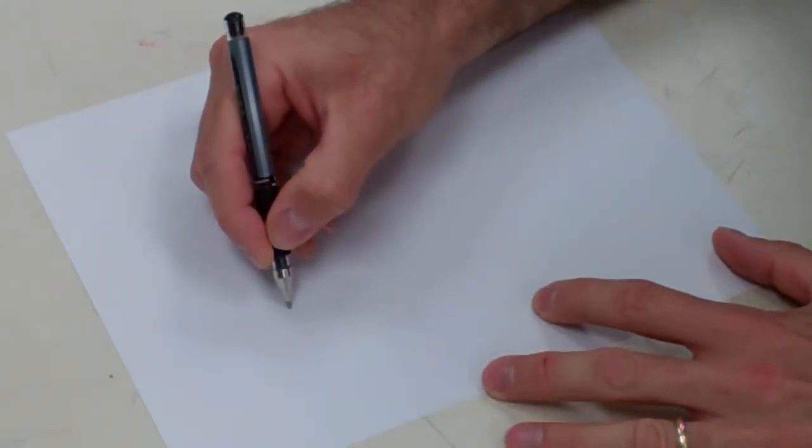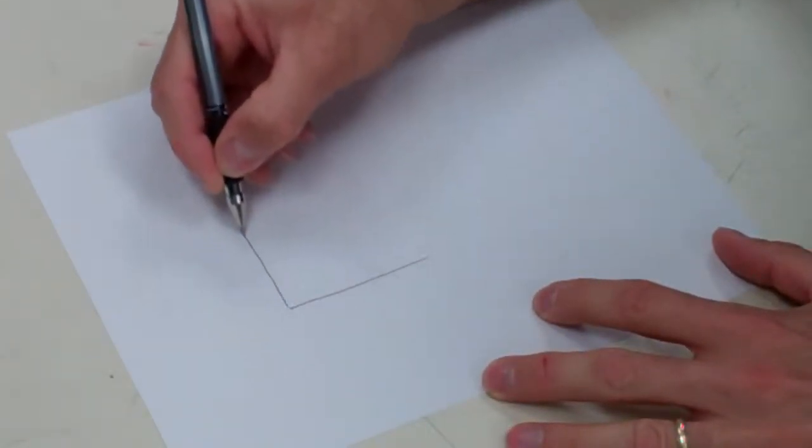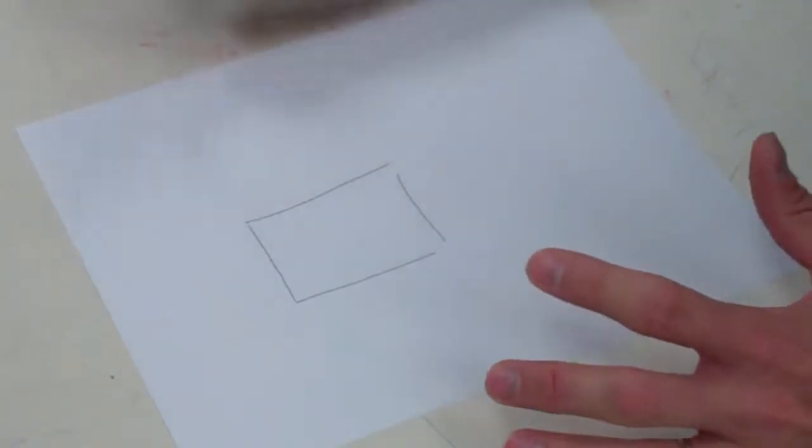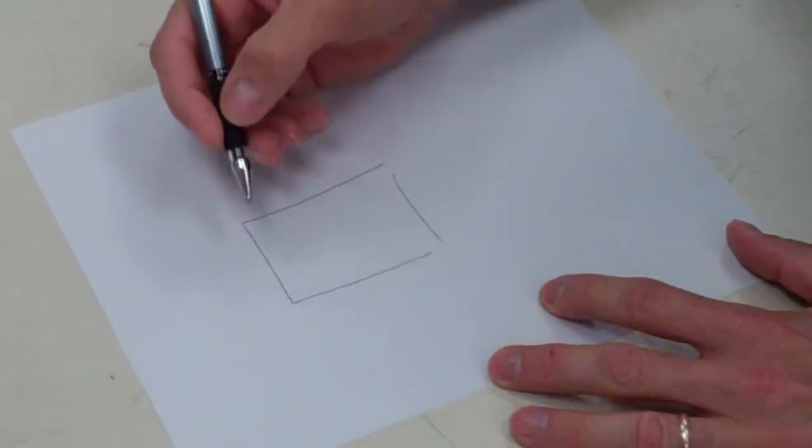So thumbnail sketches are small little sketches about this size. You figure about maybe two inches by three inches, maybe the size of a business card. That basically gives you the idea of the composition.